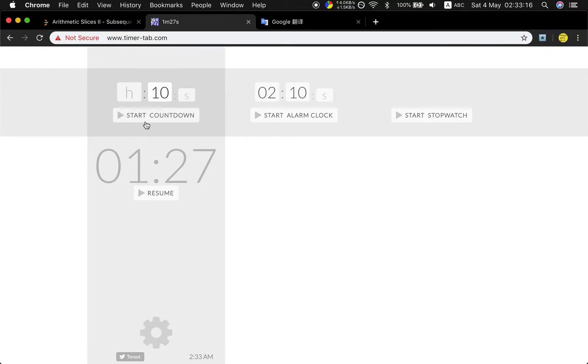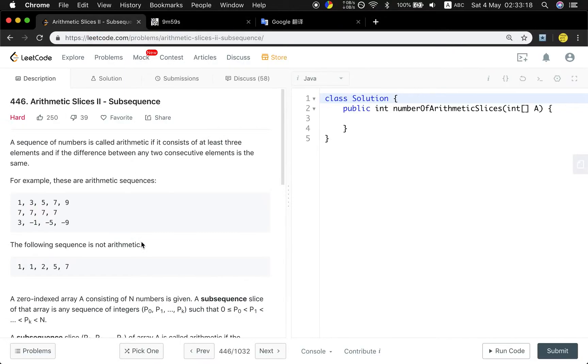Ok friends, let's solve the arithmetic slice 2 problem. A sequence of numbers is called arithmetic if it consists of at least three elements and if the distance between any two consecutive elements is the same.